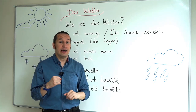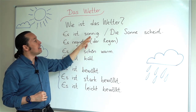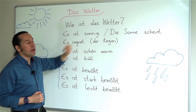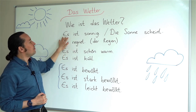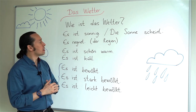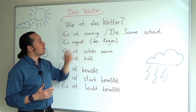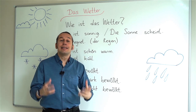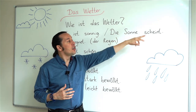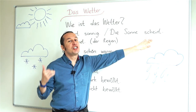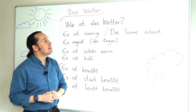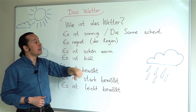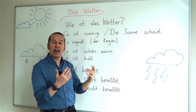Let's say the weather is sunny. Then I will say 'Es ist sonnig.' Or I can say 'Das Wetter ist sonnig.' Both of them are correct. 'Die Sonne' stands for the sun. 'Die Sonne scheint' means the sun is shining — 'scheinen,' 'scheint.' So it is sunny: 'Die Sonne scheint,' the sun shines.